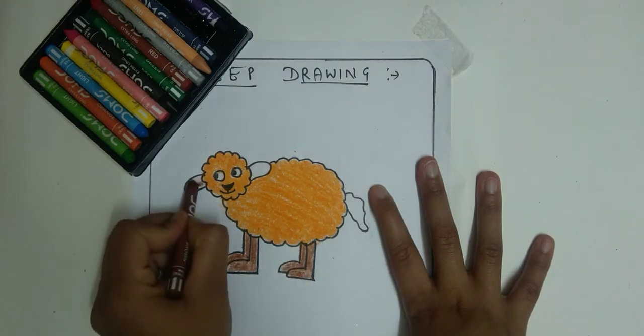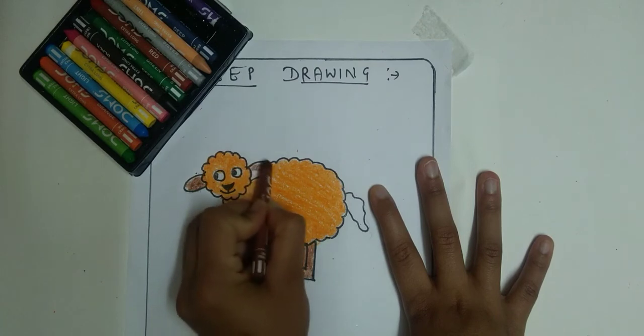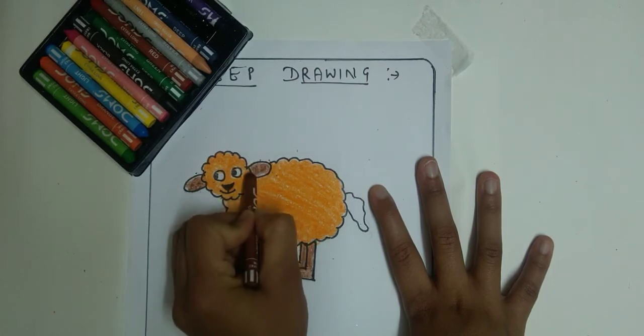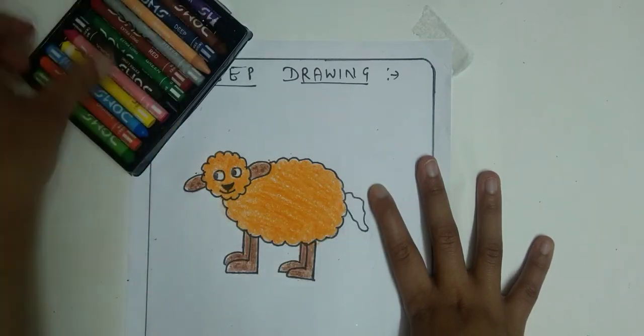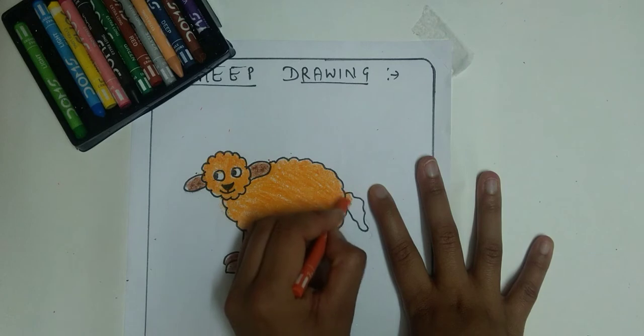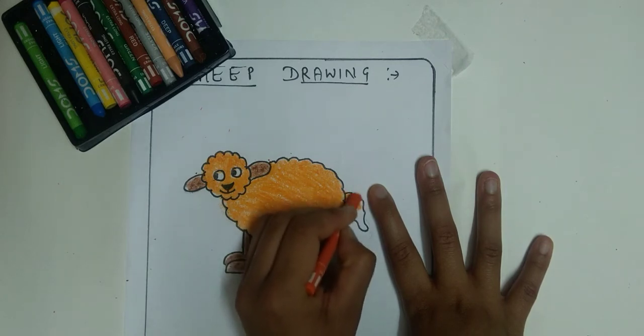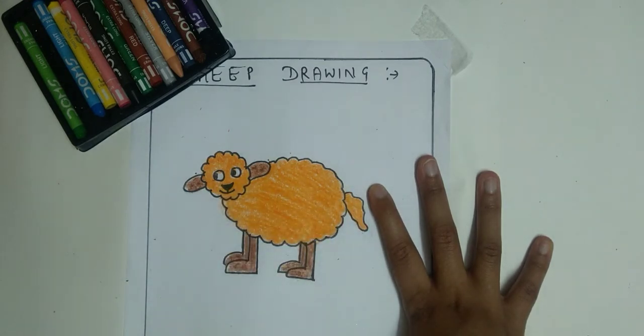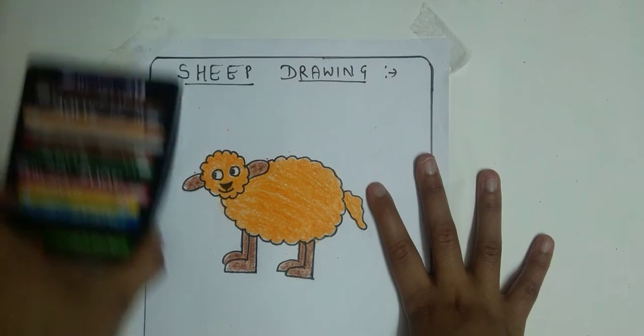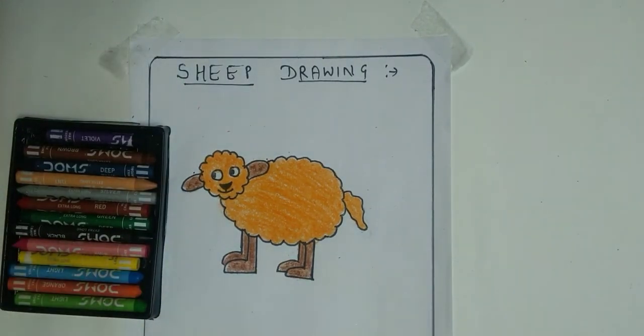Fill her ears like this. Take the orange color again for her tail like this. Now after all the coloring, your sheep drawing is ready.